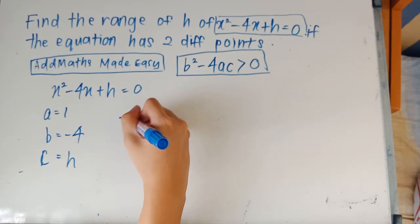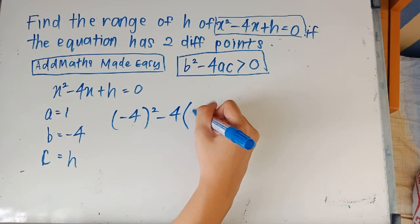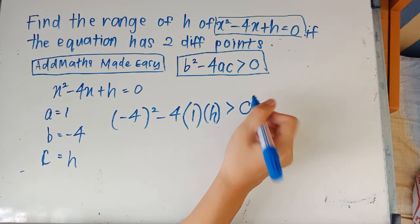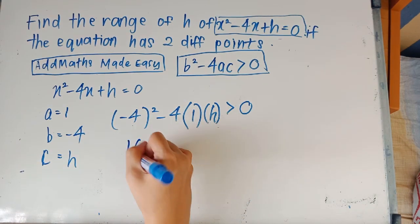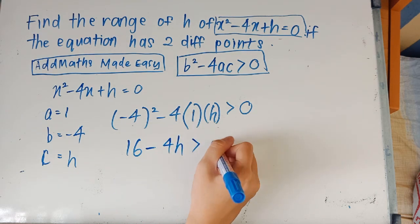B squared, negative four squared, minus four a c, bigger than zero. So you're going to expand this and you'll get 16 minus four h bigger than zero.